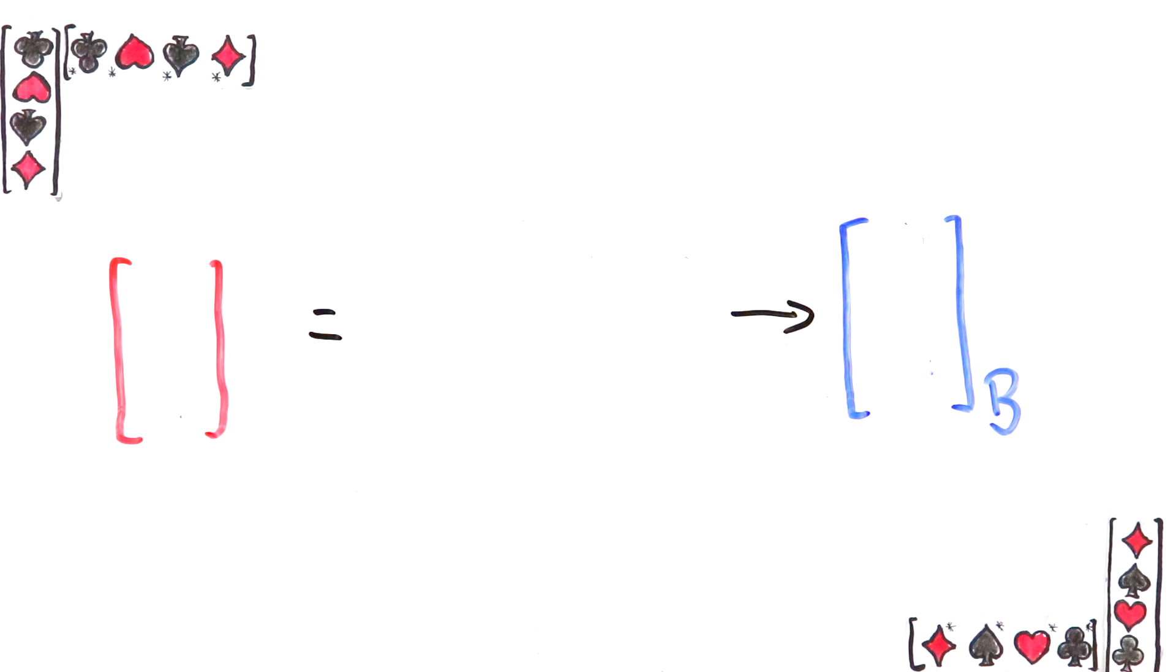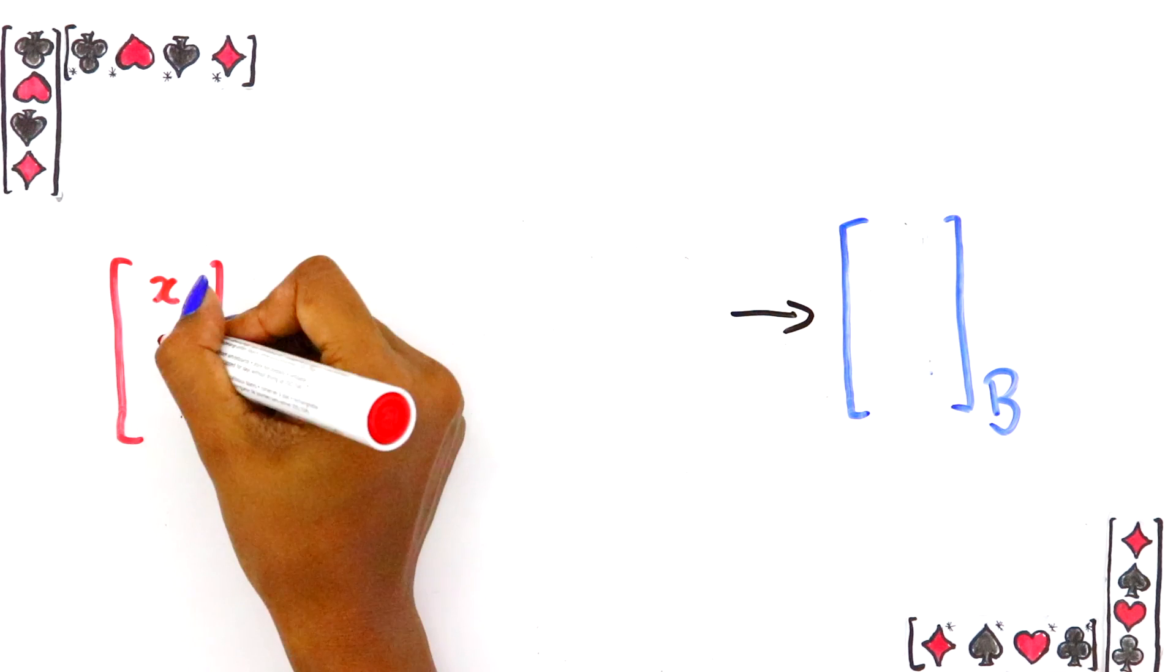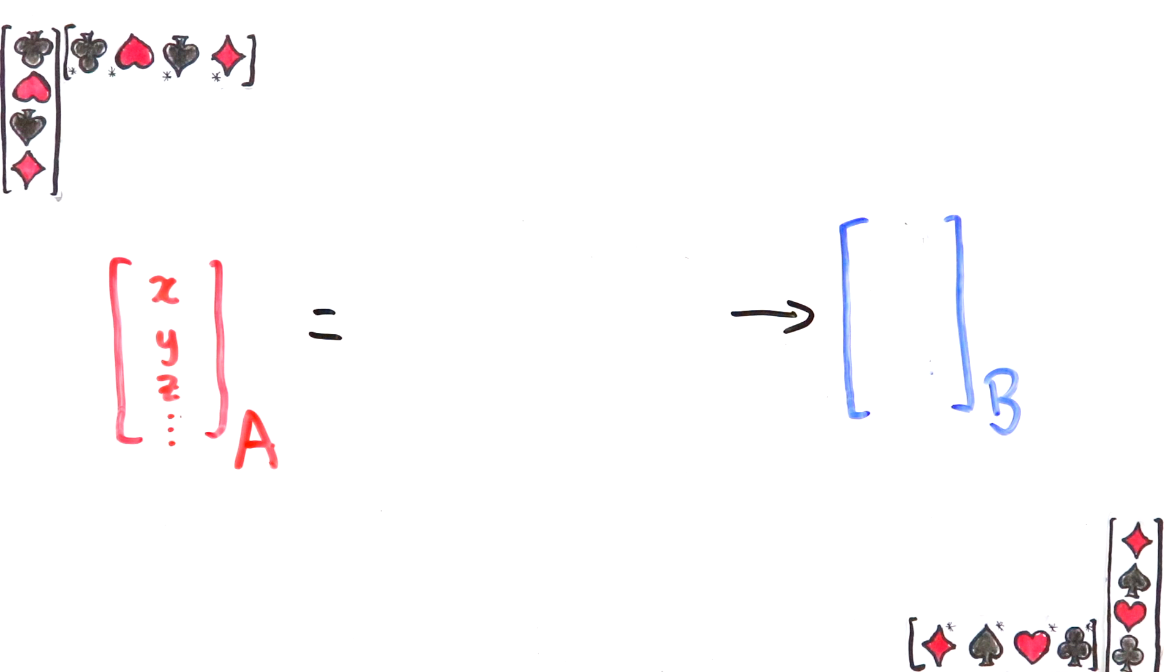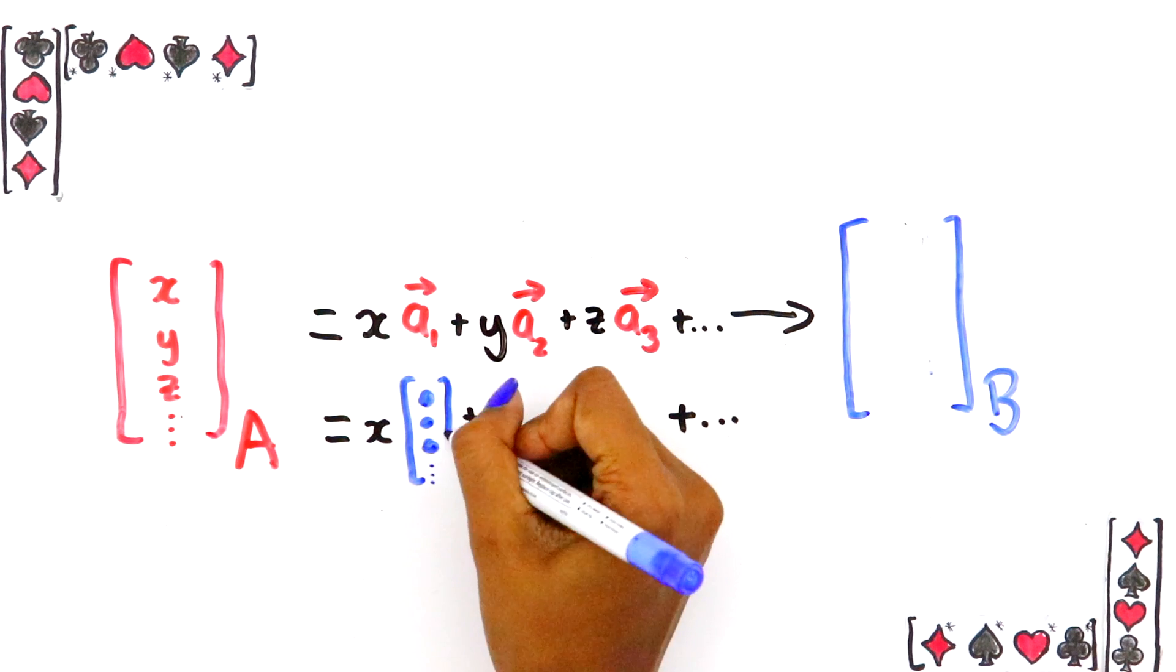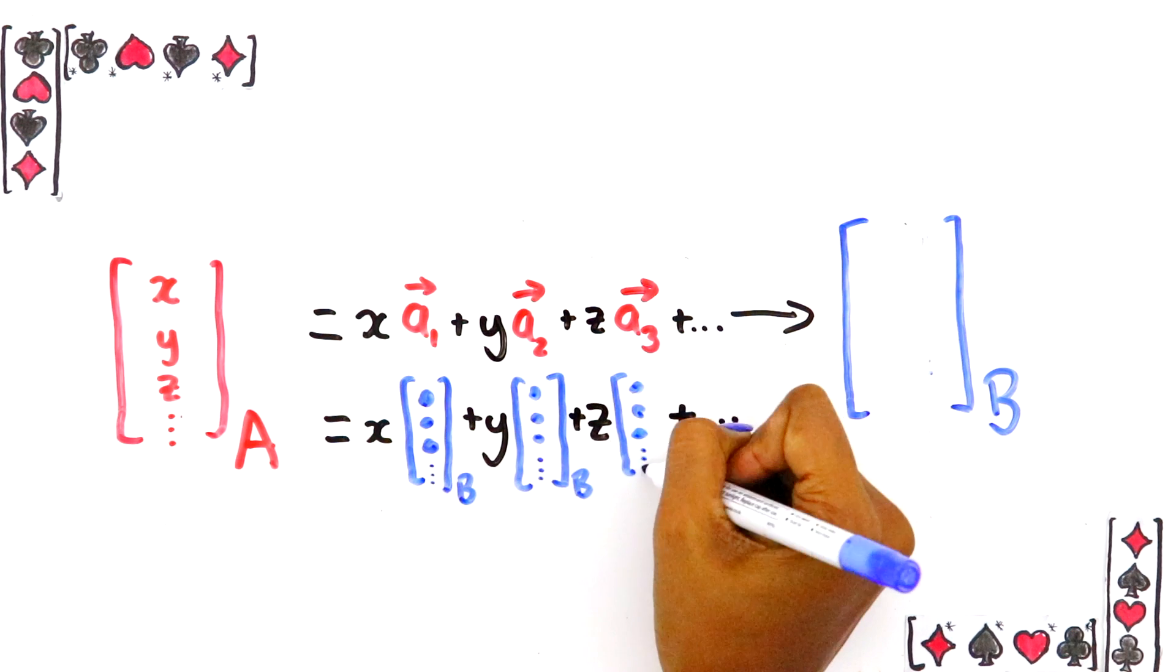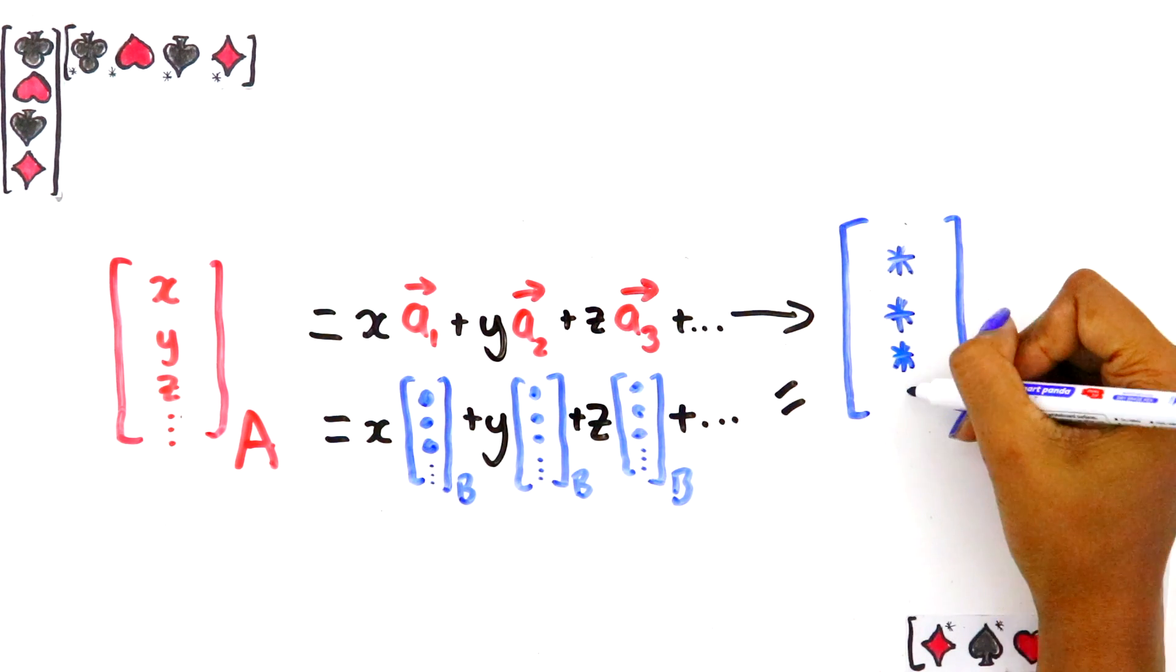What we've learnt from this example is, no matter what kind of vector Alice has and what basis she's written it in, as long as Alice somehow figures out how to write each one of her basis vectors in Bob's basis, that's enough to translate her vector to his basis.